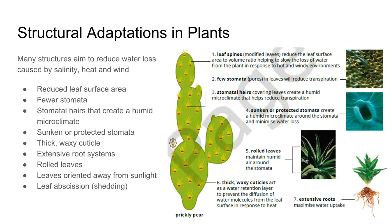We are going to look at each of these adaptations in both plants and animals. Starting with structural adaptations in plants, there are many structures which aim to reduce water loss, which can be caused by salinity, heat, and wind. Some of those include reduced leaf surface area, fewer stomata, stomatal hairs that create a humid microclimate, and sometimes stomata that are sunken or protective.